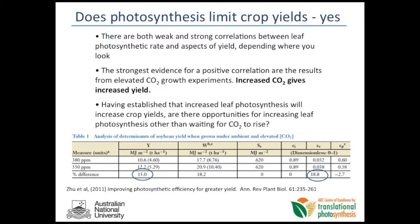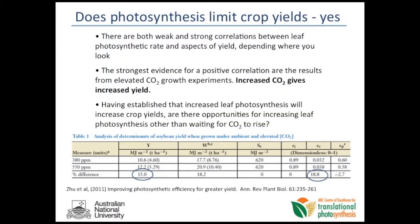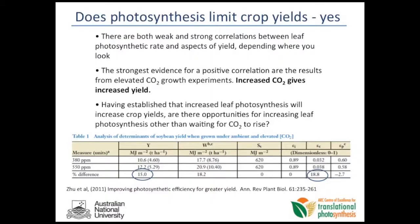So does photosynthesis limit crop yields? From my perspective, a clear yes. The evidence lies in the responses to CO2. When you grow plants at elevated CO2, essentially what you're doing is improving photosynthetic efficiency — you're basically saturating the CO2-fixing enzyme rubisco with more CO2, making it more efficient, making it more like a C4 maize plant. Data from one experiment showed yield difference went up by 15%, and if you analyse that, it's due to an increase in energy conversion efficiency of about 18%, due to improved rubisco activity.